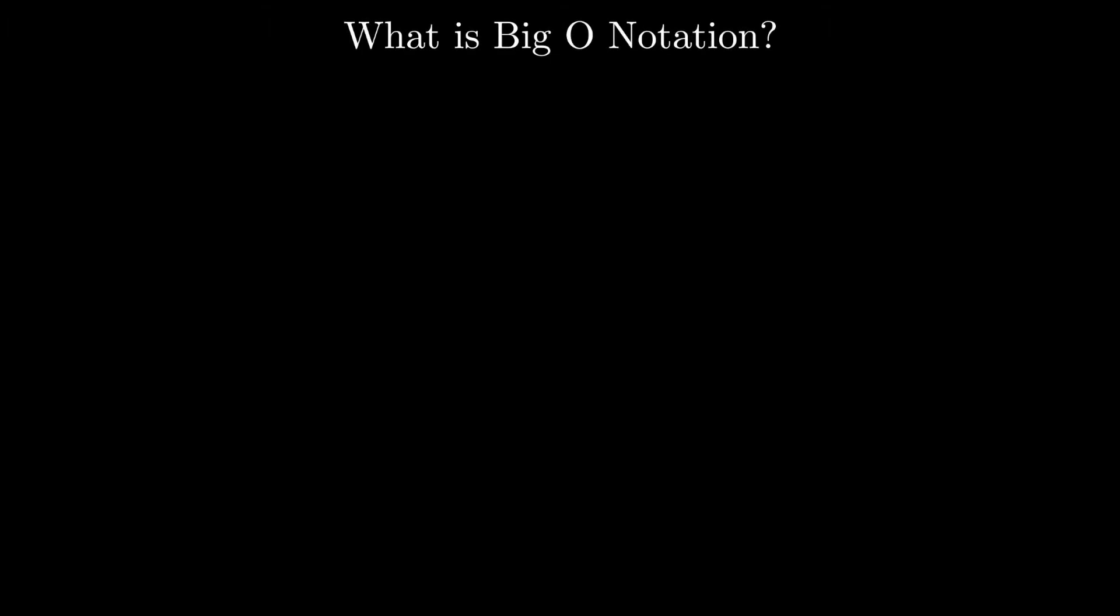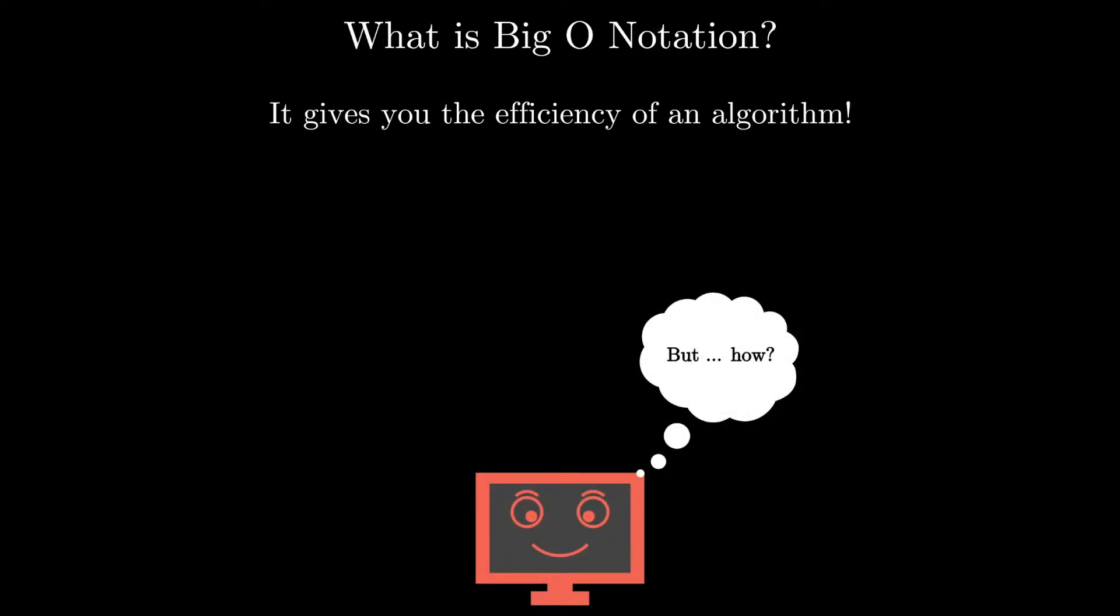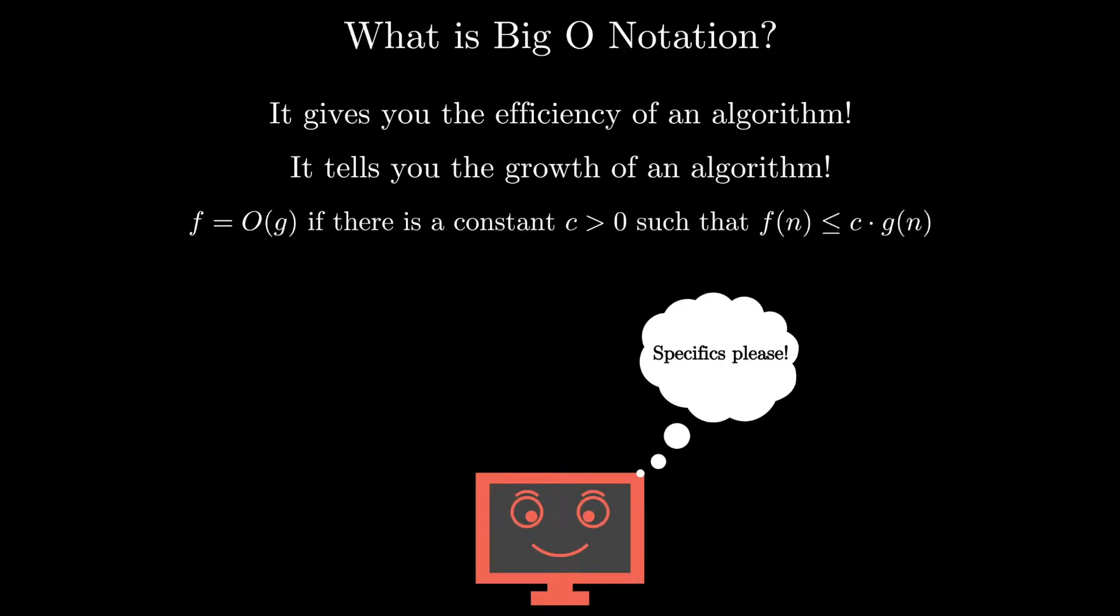If you were to ask students what exactly is Big O notation, you might get a variety of answers. One student inevitably will mention that it tells you the efficiency of an algorithm. With some further probing, another student might bring up the concept of how it tells you the growth of an algorithm. You might respond by asking some more specifics, and then out of nowhere you get hit with the following hideous but accurate definition.